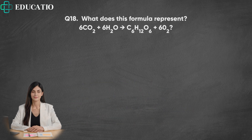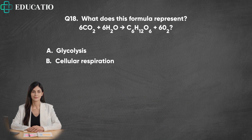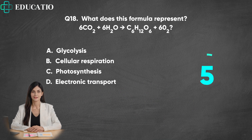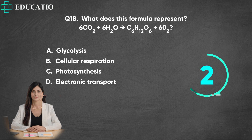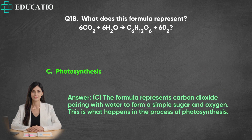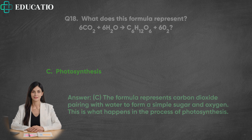Question 18. What does this formula represent? A. Glycolysis. B. Cellular respiration. C. Photosynthesis. D. Electronic transport. Answer: C. The formula represents carbon dioxide pairing with water to form a simple sugar and oxygen. This is what happens in the process of photosynthesis.